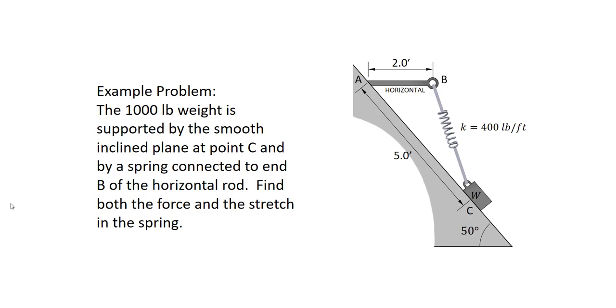The 1,000 pound weight is supported by the smooth inclined plane at point C and by a spring connected to end B of the horizontal rod. Find both the force and the stretch in the spring.